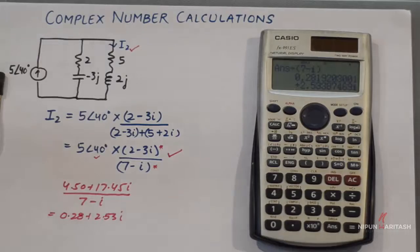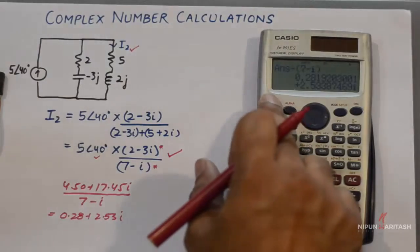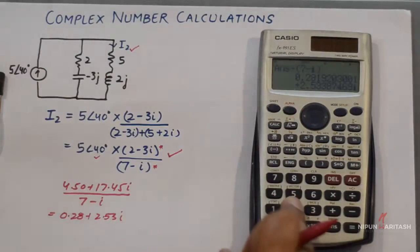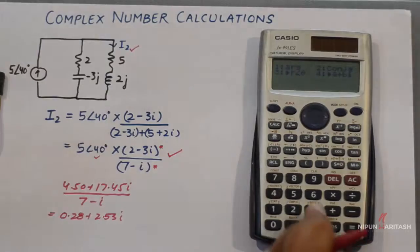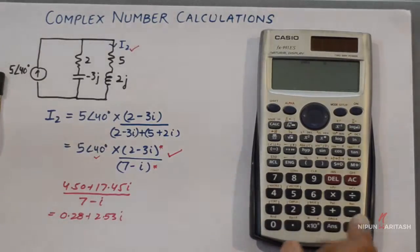Now if you want to convert this answer into polar form, you can press shift, then 2, then 3, and then equals.